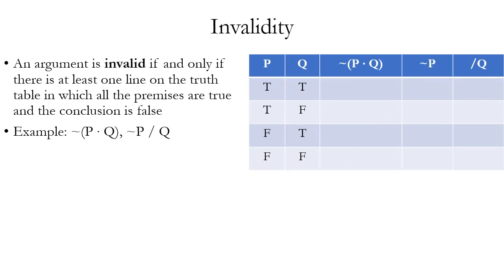Now let's look at the concept of invalidity. Invalid just means not valid. In an invalid argument, there is going to be at least one line in which all the premises are true but the conclusion is false. Our sample argument has two premises: tilde parentheses P dot Q closed parentheses, tilde P, and the conclusion is Q.